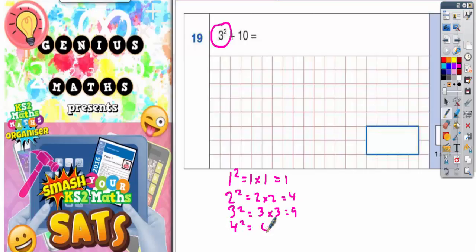4 squared is 4 times 4, which is 16. 5 squared is 5 times 5, which is 25. 6 squared is 6 times 6, which is 36.